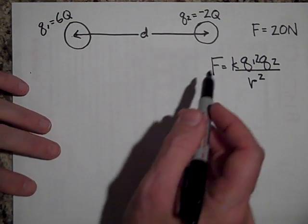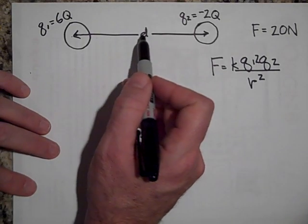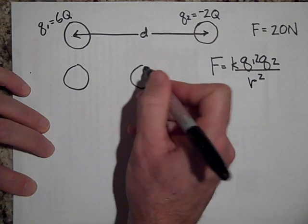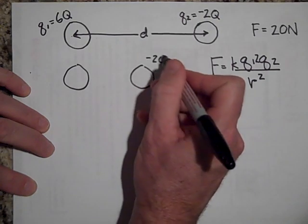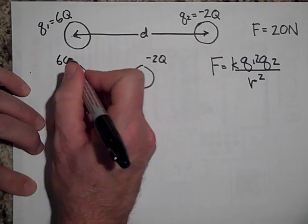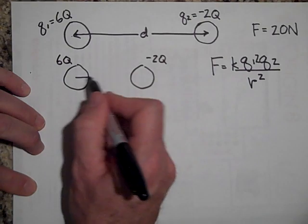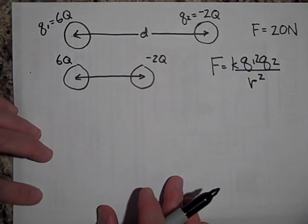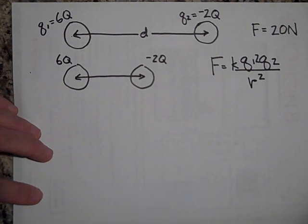Okay, what would happen to this force if we half this distance? So these were half the distance apart, but the same negative 2Q and 6Q. What would happen if we half that distance? What would happen to the force? Let's go ahead and check.